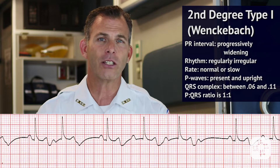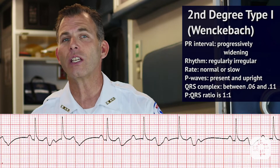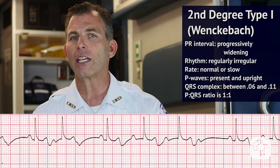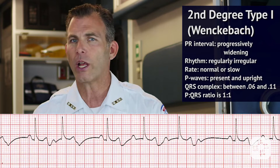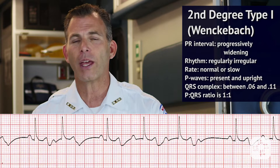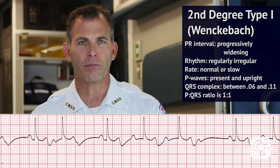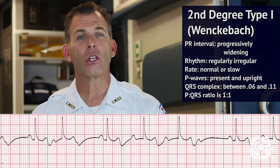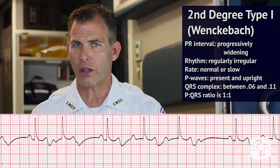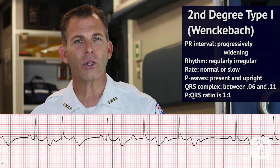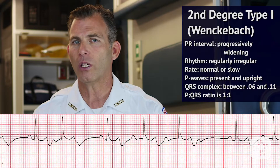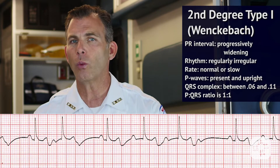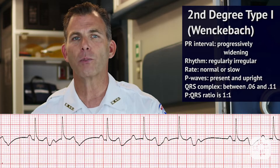In interpreting this ECG, the rhythm with this type of second degree block is regularly irregular. The rate is normal or slow and P waves are present and upright. The P to R interval is progressively lengthening until a QRS complex is dropped altogether. The QRS complex is between 0.06 and 0.11 seconds and the P wave to QRS ratio is 1 to 1 until a P wave is blocked.